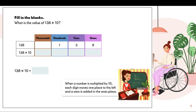So what is actually happening when we multiply a number by a multiple of 10? In this example, 138 times 10, we can answer this by using the place value chart. When we multiply these two numbers, the place value of each digit actually moves one place to the left. The last step would be adding a zero in the ones place. So 138 times 10 gives us 1,380.